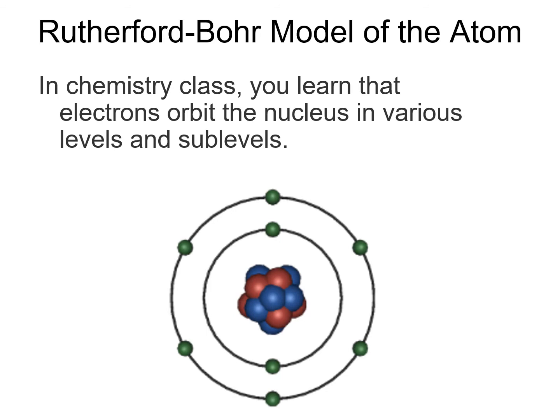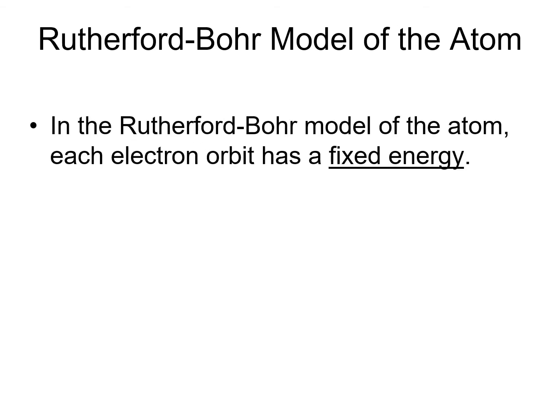In chemistry class, you learn that electrons orbit the nucleus in various levels and sublevels. Maybe you learn how to write an electron configuration. If you take a look at the modern view of how atoms are constructed, it gets pretty complicated. So, instead, what we typically do is introduce the model of the atom, sometimes called the Bohr model or the Rutherford-Bohr model of the atom.